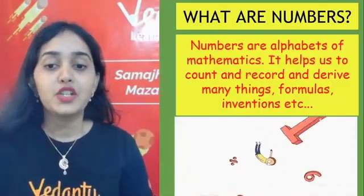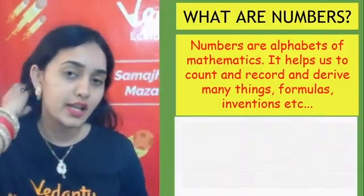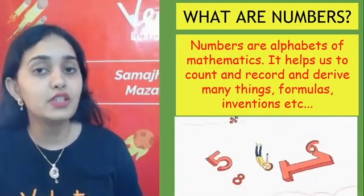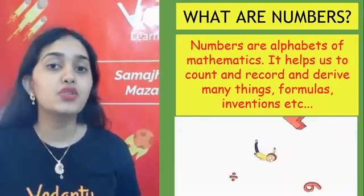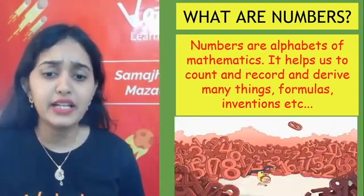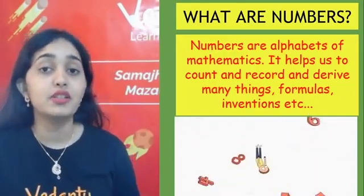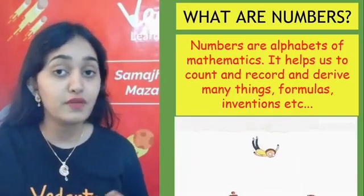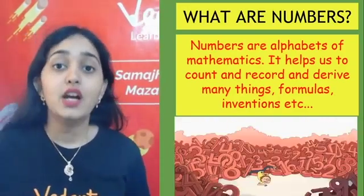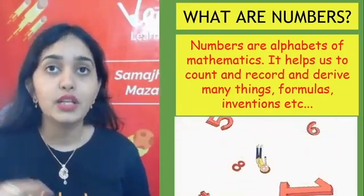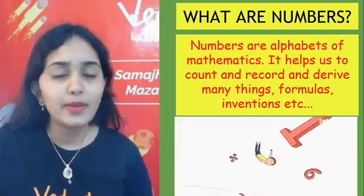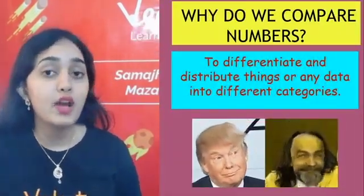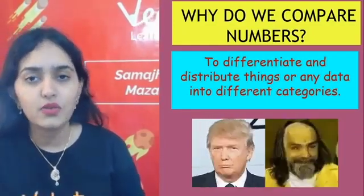So the first concept in Knowing Our Numbers is: what are numbers? Numbers are the alphabets of maths. They help us to count, record, and derive many things — formulas, inventions, etc. Basically, numbers are like mathematical alphabets which we use to count anything, denote a place, denote a value, and so many other things.